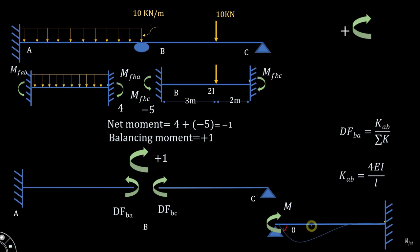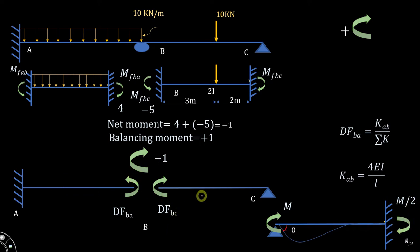The last step is the carryover. When you apply a moment at one end, half of the moment is transferred to the fixed support. So for these two segments: if a distributing moment is applied here, half of that moment will be transferred to the far support. This is what happens in the carryover process.